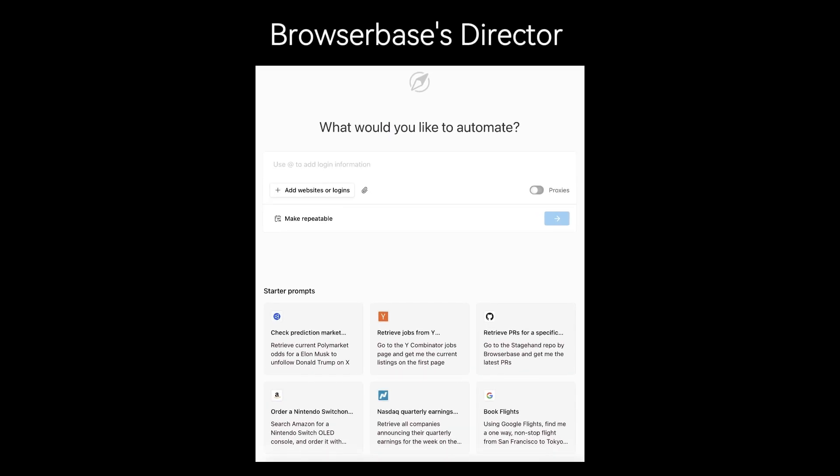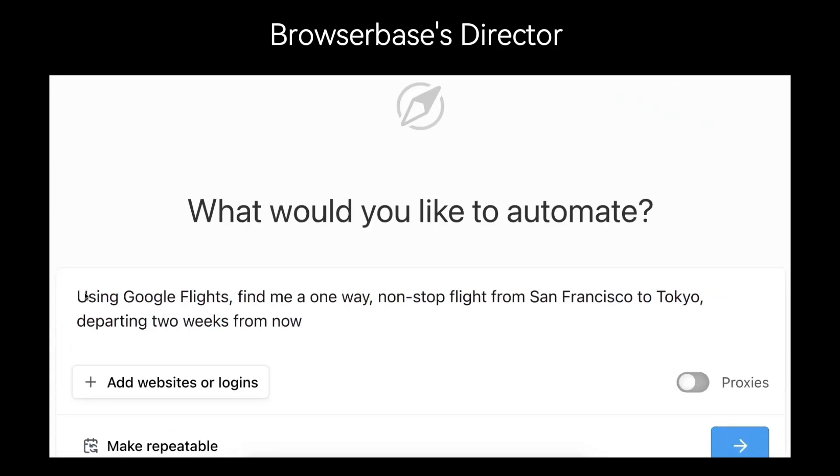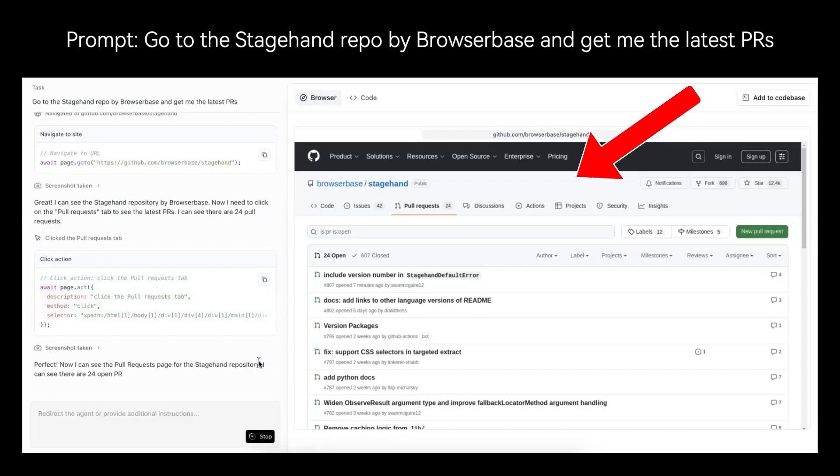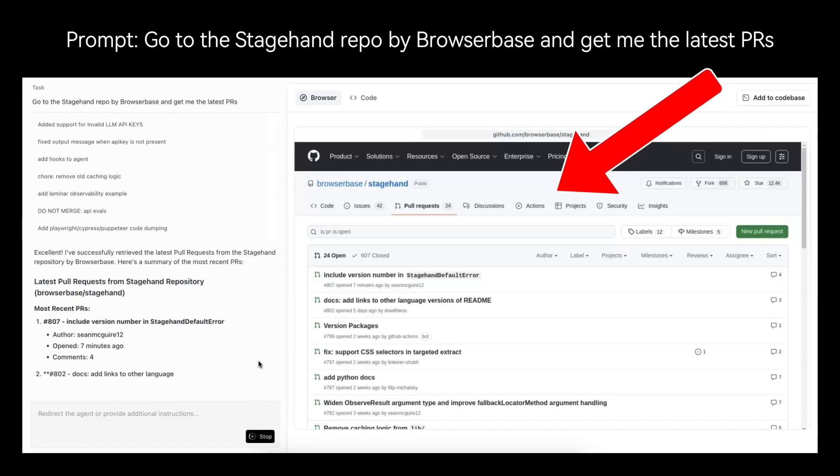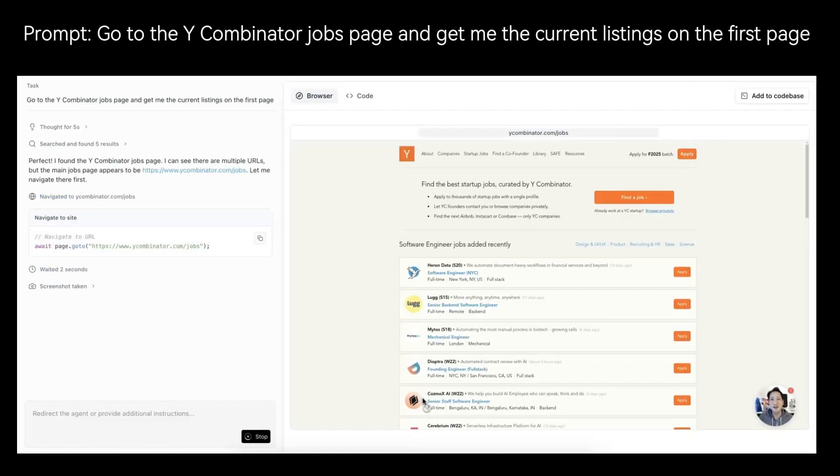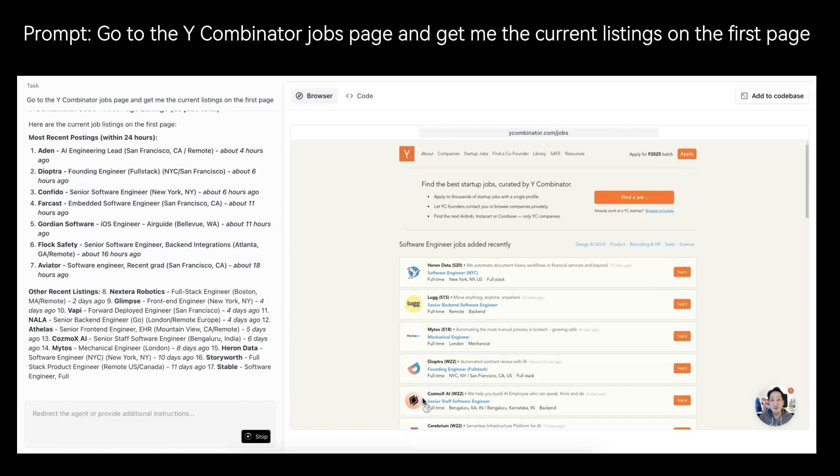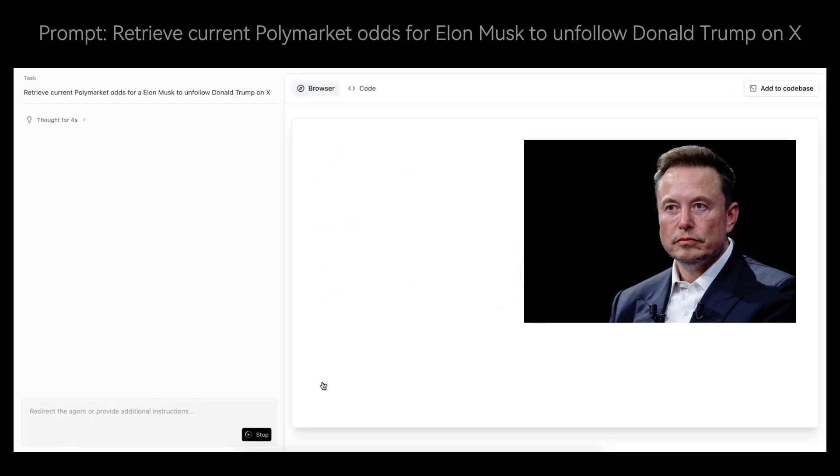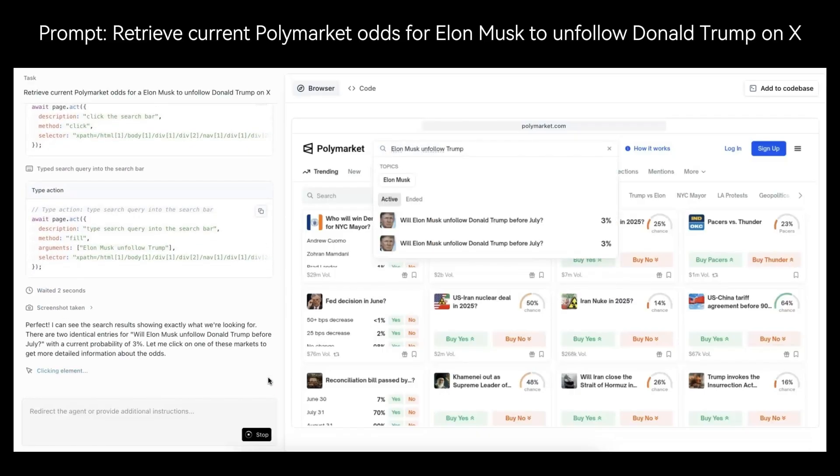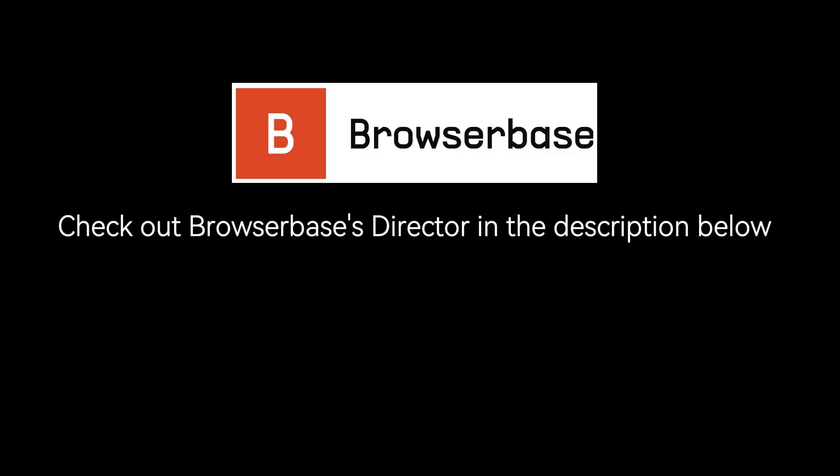This is the exact problem BrowserBase set out to fix. It's a new low-code builder called Director that writes automation code for you. Instead of writing a rigid script, you just describe the task you want to automate in plain English. For example, you can literally type, 'go to the StageHand repo by BrowserBase and get me the latest PRs.' As Director analyzes that request and performs the actions on the right, it's actually generating a robust script for BrowserBase's AI-enhanced framework, StageHand. StageHand is what's controlling the browser. It uses an LLM to dynamically generate code and understand your intent. This means your automation is dramatically more resilient. This provides a powerful new way to build web automation for AI agents and applications. It allows you to go from a simple instruction to a functional automation in minutes, bypassing all the fragile, hard-coded details that made older scripts so prone to failure. It's free to get started, and the BrowserBase platform has a seriously generous free plan. Check out BrowserBase's new director using the link in the description.